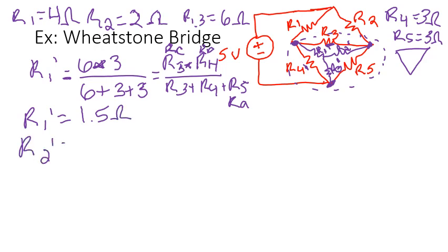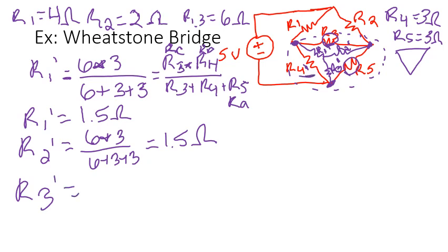Do the same thing, calculate R2 prime. And R2 then gets multiplied by R3 times R5. So that is 6 times 3 over 6 plus 3 plus 3. It came up to the same number as R1 prime in this case. R3 prime is multiplied by R4 times R5. So that's 3 times 3 over 6 plus 3 plus 3. And that comes out to be 0.75 ohms.